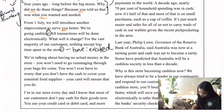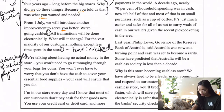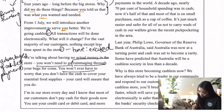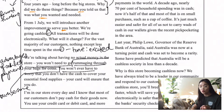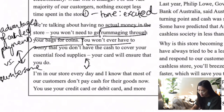'You won't need to go rummaging through your bags for coins. You won't ever have to worry that you don't have the cash to cover your essential food supplies. Your card will ensure that you do.' Not only is she highlighting the advantages, she's arguing for cashless payments by showing you the inconveniences of having cash in phrases like 'you won't need to' and 'you won't ever have to.' The phrase 'rummaging through your bags for coins' gives this sense of how cumbersome physical money is compared to cashless payments. She highlights cashless payments with the word 'simple,' reiterating her point about how cumbersome coins can be.